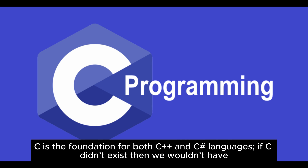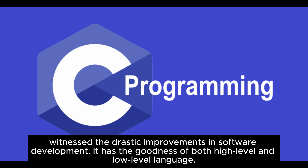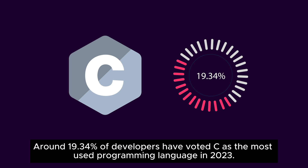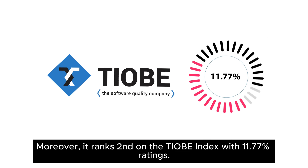Is C relevant today? C is the foundation for both C++ and C# languages. If C didn't exist, we wouldn't have witnessed the drastic improvements in software development. It has the goodness of both high-level and low-level languages. Around 19.34% of developers have voted C as the most used programming language in 2023.